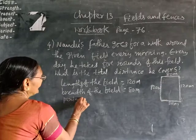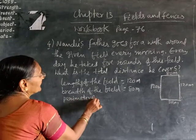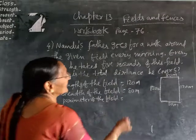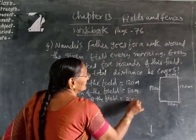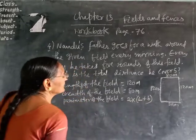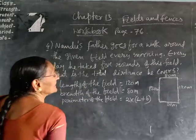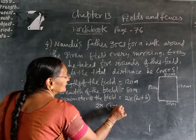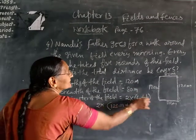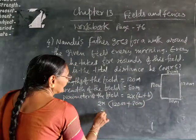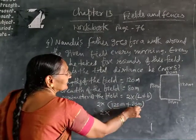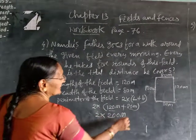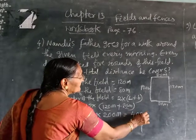So, perimeter of the field — how much is that? That is 2 into L plus B. This is the formula, you know that, we studied it in a previous class. So, 2 into L: in place of L you write 120 meters, and in place of B you write 80 meters. Then 120 plus 80 is 200 meters. Then 200 into 2 is equal to 400 meters.